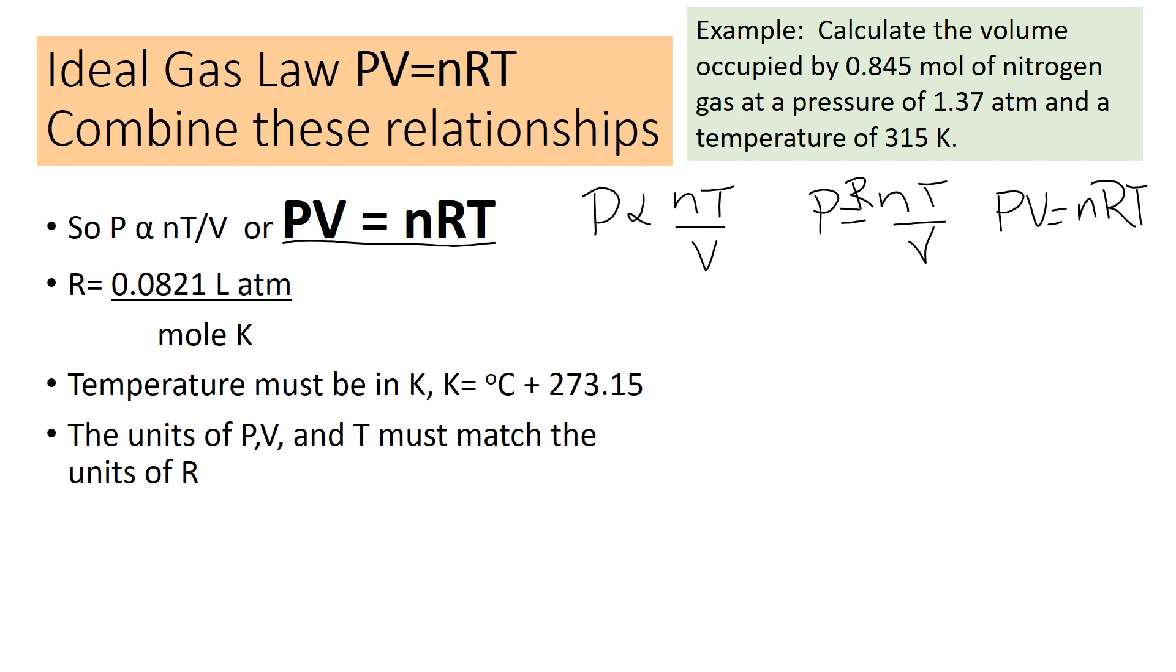So what is R? R is a constant. That means it's always the same. And R is always equal to 0.0821 liter atmospheres over mole kelvin. That's a lot of units. But part of our purpose is to get the units to relate because pressure, temperature, volume, and moles don't have the same units. So this helps bring our units consistent. Another thing to remember, it's very important, is that the temperature must be in kelvin. The last thing to watch for is that the units of P, V, and T have to match R. We have to be in liters, atmospheres, mole, and kelvin.